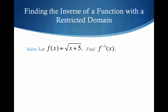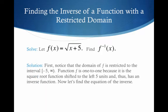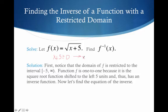One last thing I want to talk about before we wrap up inverses is how to find the inverse of a function with a restricted domain. Let's let f of x equal the square root of x plus 5, and let's try to find the inverse. The square root of x plus 5 is one of those functions where we get a restricted domain. We take x plus 5 and solve greater than or equal to 0, and when I solve this inequality I get x has to be greater than or equal to negative 5.